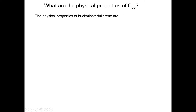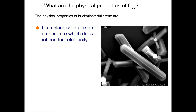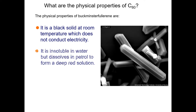What are the physical properties of Buckminsterfullerene, also called Carbon-60? It is a black solid at room temperature which does not conduct electricity. Carbon-60 is insoluble in water but dissolves in petrol to form deep red solutions.